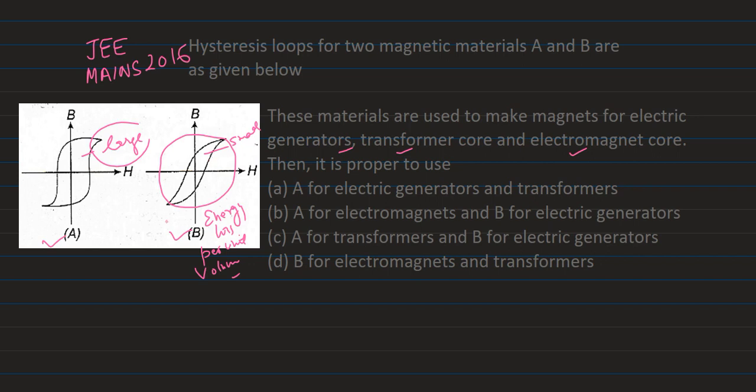They go through repeated actions of magnetization and demagnetization. So BH area is small, which is in comparison to this A figure. So obviously we will use B for electromagnet and transformer application. So in options, D is suitable: B for electromagnets and transformers.